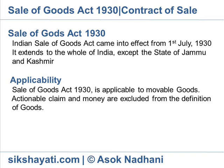It extends to the whole of India except the state of Jammu and Kashmir. On 22nd September 1963, the Act was renamed as Sale of Goods Act, 1930, and the word 'Indian' was deleted.